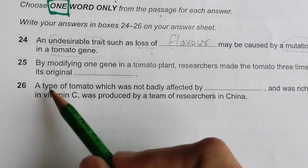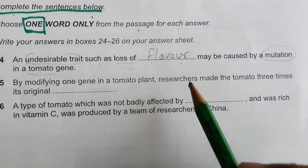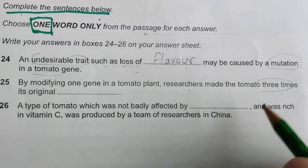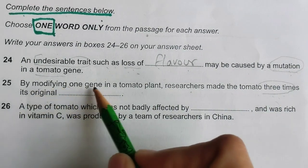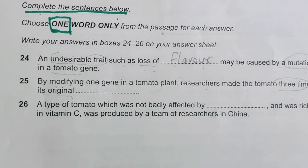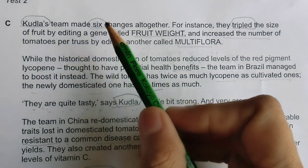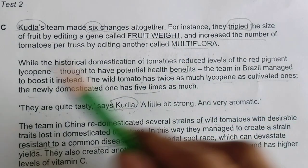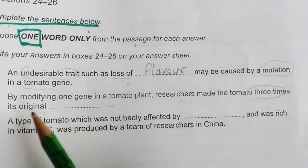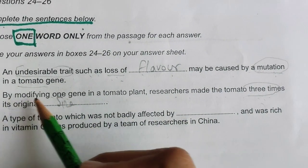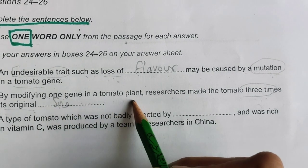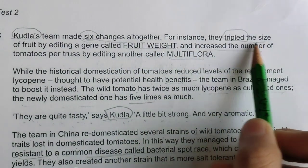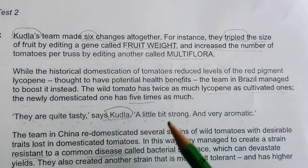Question 25: 'By modifying one gene in a tomato plant, researchers made the tomato three times its original _____.' I recall in paragraph C there were numbers and figures — they tripled the size of fruit by editing one gene. So 'three times its original size' — the answer for question 25 is 'size.' The passage says Kudla made six changes altogether; for instance, they tripled the size of fruit by editing a gene.